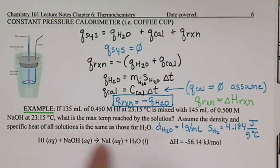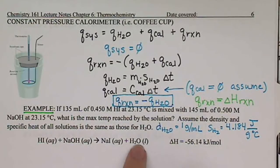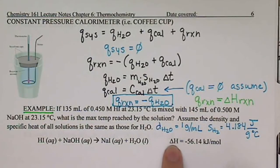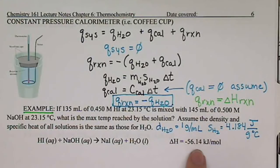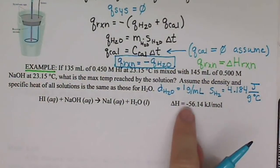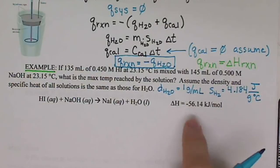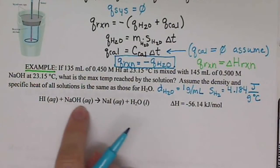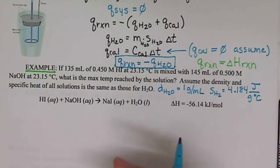We're given our neutralization equation: an acid plus a base forming a salt and water. We have a delta H value of negative 56.14 kilojoules per mole. The negative value tells us this is an exothermic reaction, so heat is going to be released as a result of this equation.